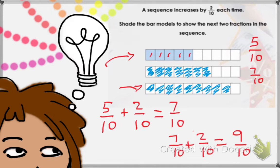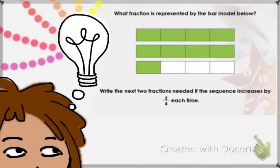Our fraction is 9 over 10. Next: what fraction is represented by the bar model below? The first thing we need to figure out is what is our denominator. In each bar model we have 4 parts, so our denominator is 4.